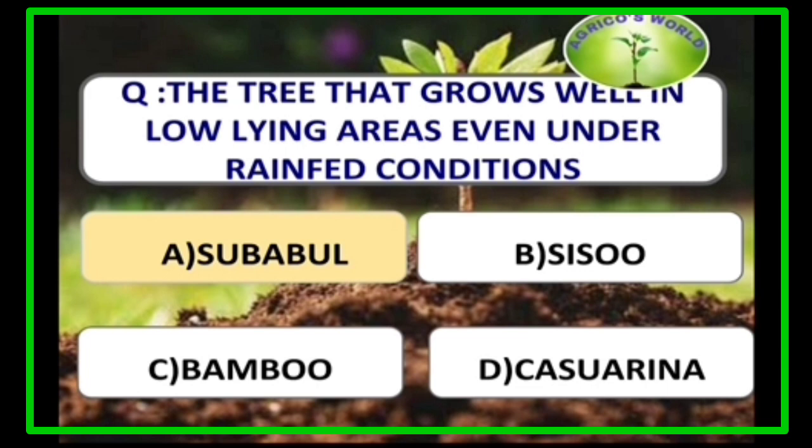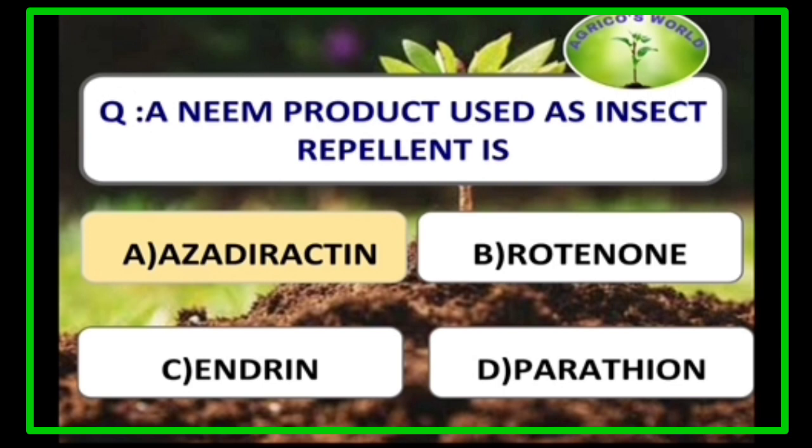The tree that grows well in low-lying areas even under rain-fed conditions is Subabul. Subabul (Leucaena leucocephala) is a nitrogen-fixing Fabaceae tree species. A neem product used as an insect repellent is azadirachtin.